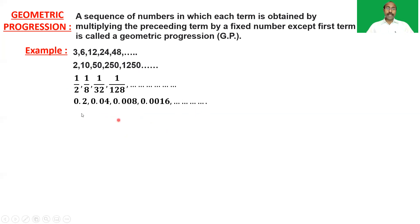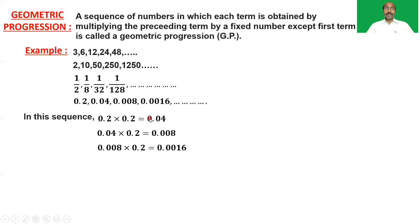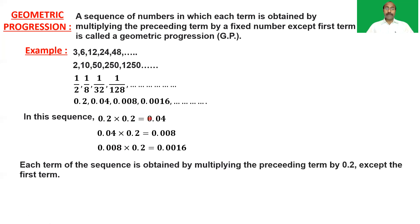One more example: 0.2, 0.04, 0.008, 0.0016, and so on. In this sequence, 0.2 into 0.2 is 0.04, 0.04 into 0.2 is 0.008, and 0.008 into 0.2 is 0.0016. Each term is obtained by multiplying the preceding term by 0.2 except the first term. So the terms are in geometric progression with first term 0.2 and common ratio r equal to 0.2.